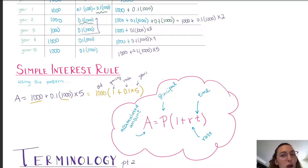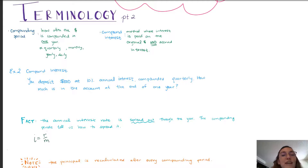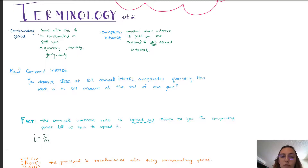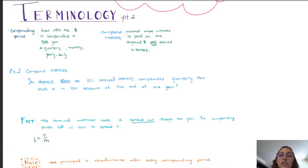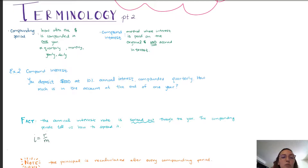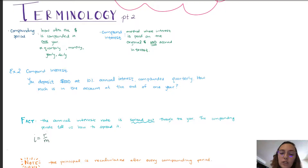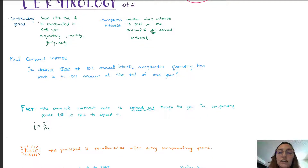Now let's look at the other method: compound interest. For compound interest we're going to introduce another term — the compounding period. The compounding period is how often our amount is compounded, or how often we apply the interest onto the principal amount in one year. If we're compounding quarterly, that means we're applying the interest four times in the year; monthly means 12 times; yearly, once; daily, 365. The principal in compound interest changes because compound interest is the method where interest is paid on the original amount and the accrued interest. The principal is recalculated after every compounding period to accommodate for the interest that was accrued.